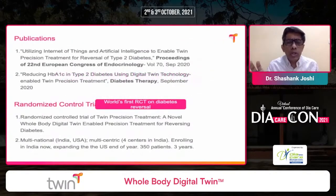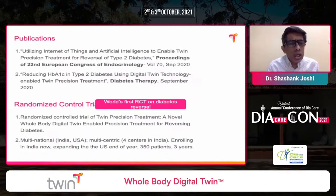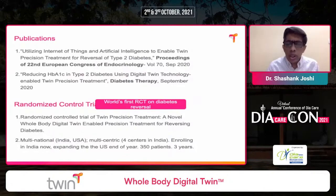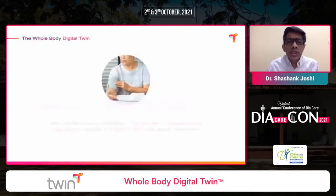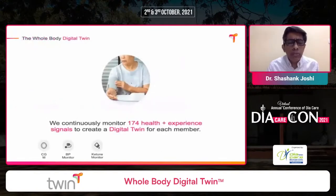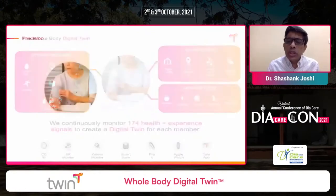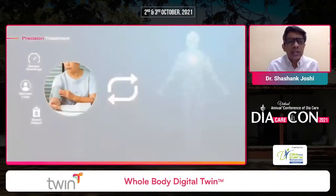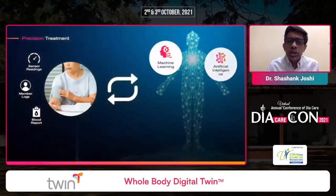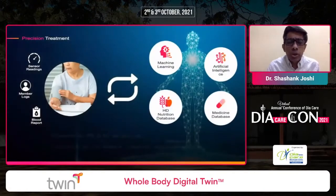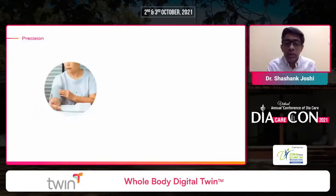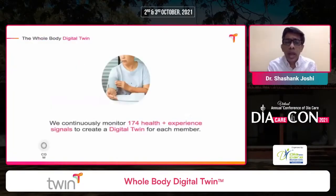There are currently two ongoing RCTs in India and one in four centers, plus an RCT in the US, all studying diabetes reversal. With CGM, blood pressure monitor, ketone monitor, scale, Fitbit, Apple Watch, and the Twin app collecting sensor inputs, blood work, and member logs for nutrition, energy, and mood, machine learning combined with AI-driven medicine and nutrition databases can individually curate a precise solution.